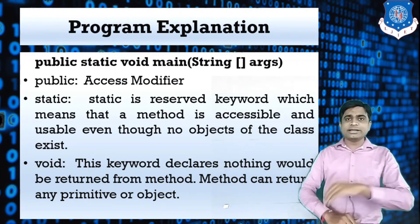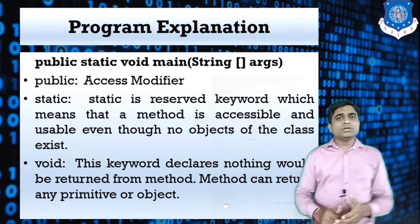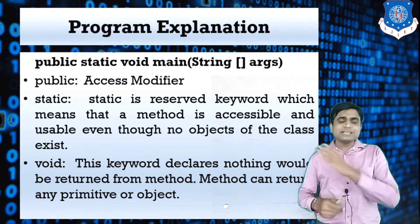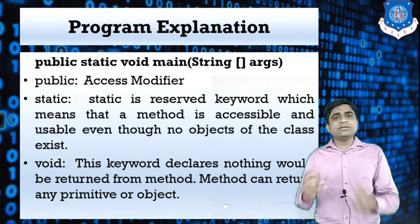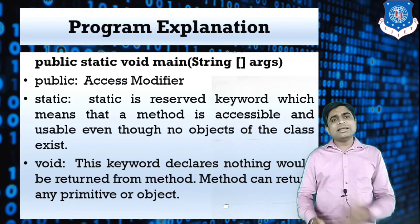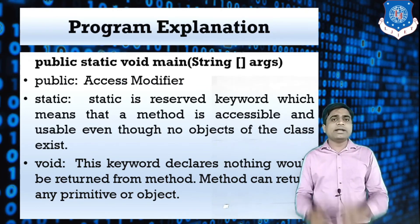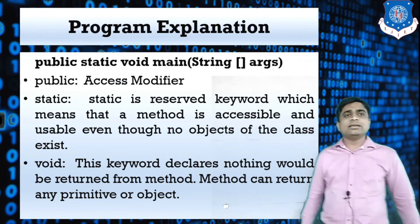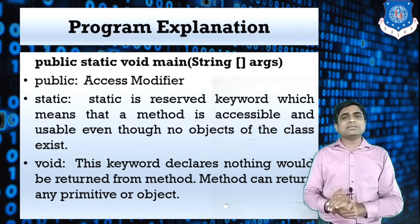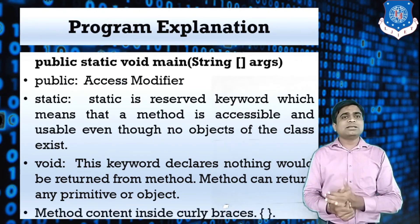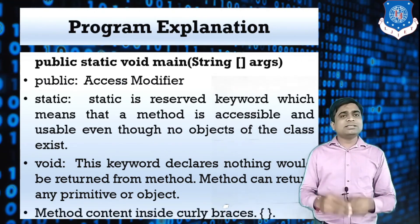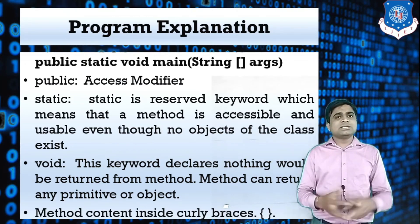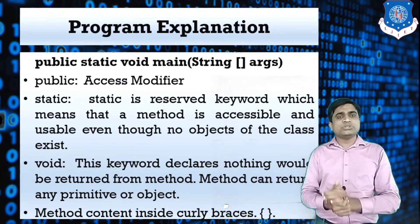The keyword void means the method does not return any value. If you are not returning any value, write void; if returning something, write the appropriate data type. And main is the method name — whatever code you write in the curly braces will be executed.